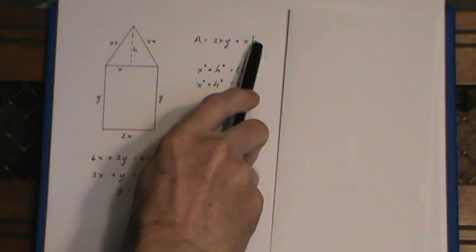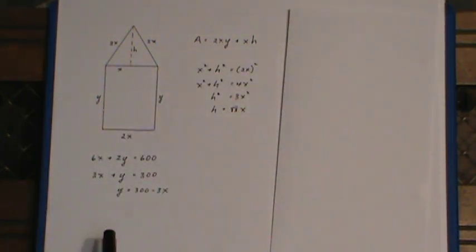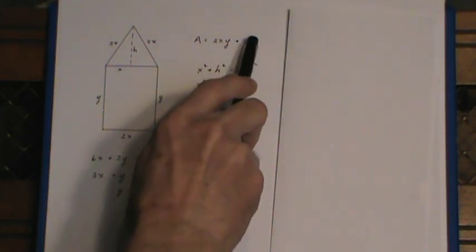Now this time I've got three variables. I've got an x, a y, and an h. I can take care of the y by dividing through here by 2, makes this a little simpler, and moving the 3x over. I've got a substitution now for y.